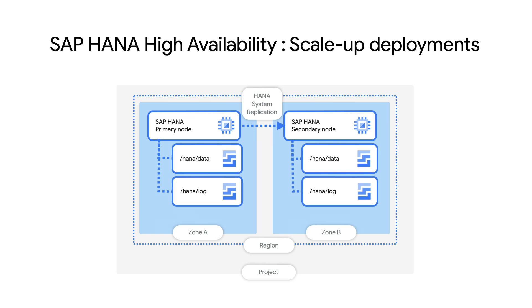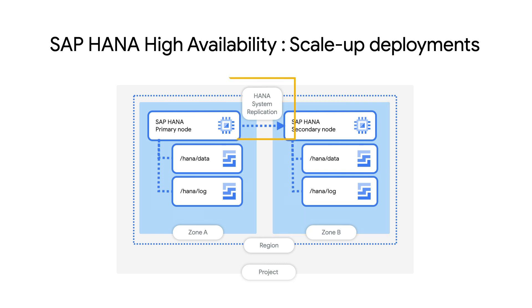If you'd like to try such a setup for yourself, check out this link, which provides additional information and also a template for our automated infrastructure provisioning service called Deployment Manager. This script will spin up two HANA instances in two different zones, then configure HANA system replication between them, and also set up a Linux cluster without any user interaction — fully automated in less than 30 minutes.